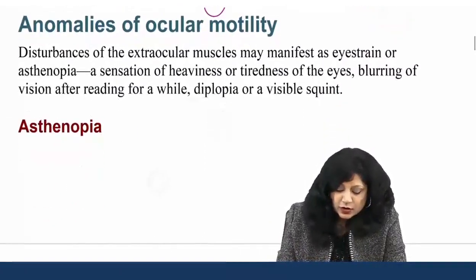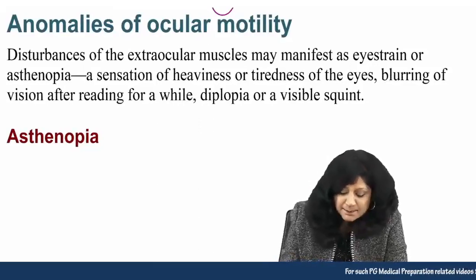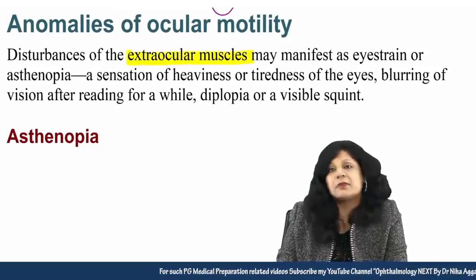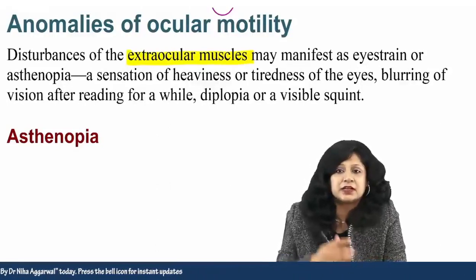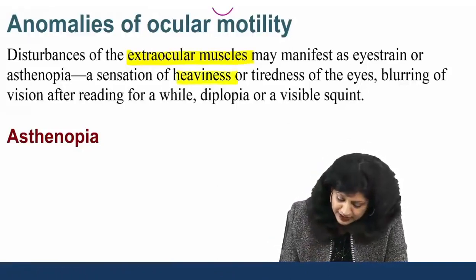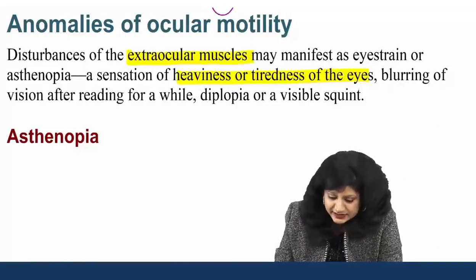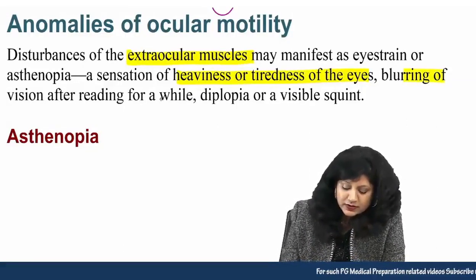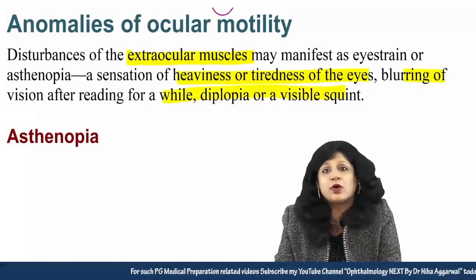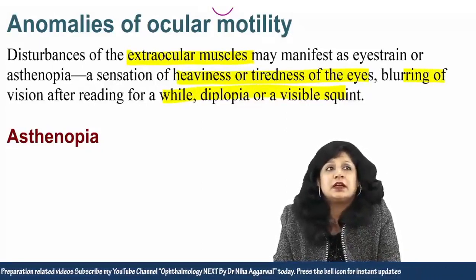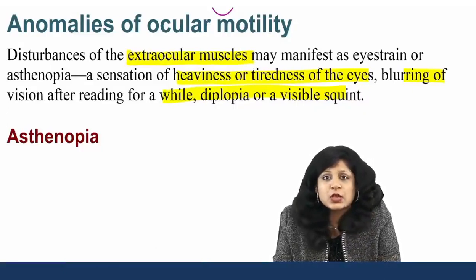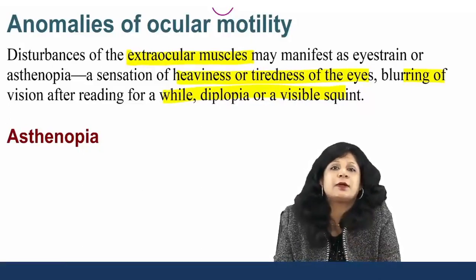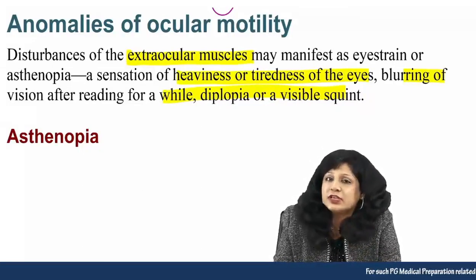First we will start with the anomalies of ocular motility. Whenever you have some problem with the extraocular muscles, that may manifest as asthenopia, eye strain, difficulty seeing things, a sensation of heaviness or tiredness in the eyes, blurring of vision after reading or after near work or in dim light, or the patient may have diplopia or a visible squint. All these things will help you in understanding when to think about a squint or disorder in ocular motility.